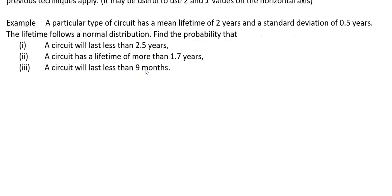This example says a particular type of circuit has a mean lifetime of 2 years and a standard deviation of 0.5 years. The lifetime follows a normal distribution. Your first thing to do here is set up what your mean is. So your mean μ is 2 and your sigma σ is equal to 0.5. We'll set that up first and then we can get started with the questions.